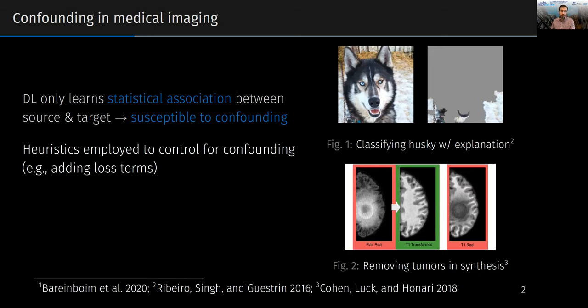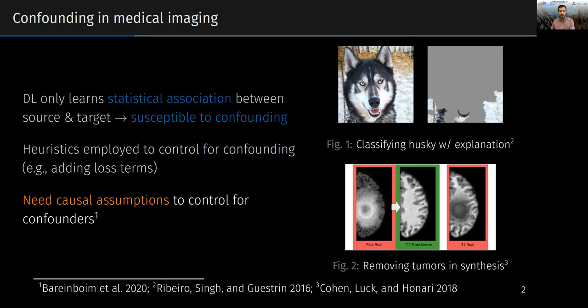Often when this behavior is noticed, researchers attempt to correct for the problem with heuristic approaches — for example, adding loss and other penalty terms or using data augmentation — but it's been proven that you need causal assumptions to control for confounders in observational data.